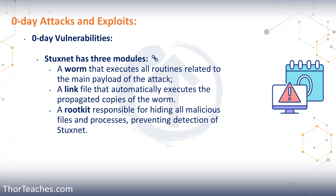The Stuxnet worm had three separate components. First, a worm that propagates aggressively throughout systems. Then it had a link that would automatically execute the propagated copies of the worm. And then it had a rootkit that would hide itself, hide all the malicious files and processes, preventing detection of Stuxnet. The worm would spread as much as it could and scan for Siemens Step7 software on any computer it infected. That computer also had to control a PLC. If both of those conditions were not met, Stuxnet would become dormant inside that computer, but it would still replicate.